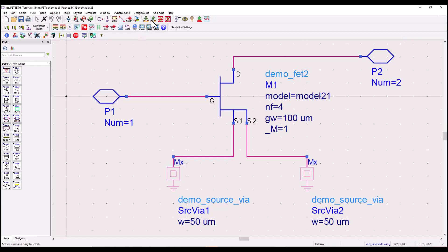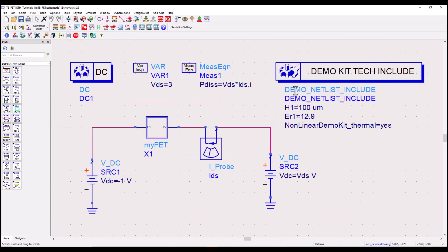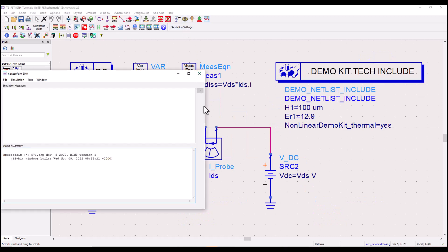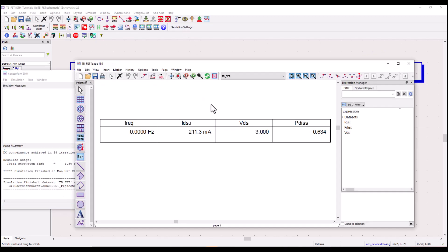Now once you have these basic things going we can go ahead and run a regular circuit simulation. And in this case it's a simple DC simulation. You can see the drain current of 211 milliampere and power dissipation of 0.634 watt. Now this is pure electrical simulation which we have performed now.